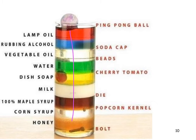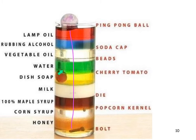This is a picture showing a whole lot of different density items, from least dense to most dense: ping pong ball, lamp oil, rubbing alcohol, vegetable oil, plastic beads, water, tomato, milk, syrup, maple syrup versus corn syrup, honey, and a bolt made of iron at the bottom.